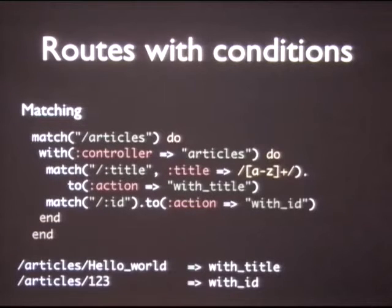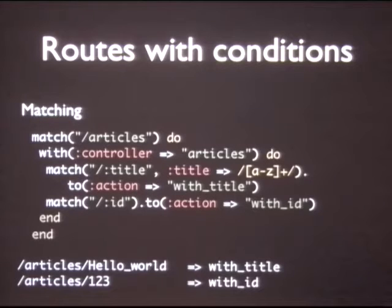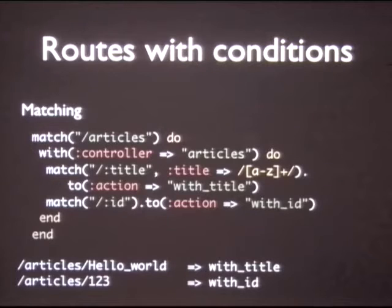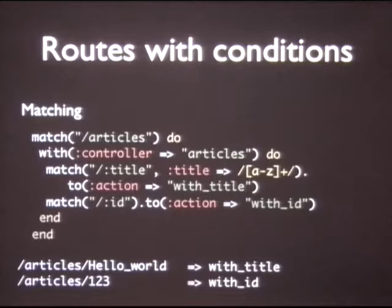Routes with conditions. I'm actually sneaking in some more features here. Pretty much in order to be flexible, any single method that's available when building routes, you can pass a block to it, and those settings will be applied to every route declared in that block. So here I'm setting a prefix for every route declared to articles, with controller articles. Every route in that second block is going to have the controller set to articles. And match the placeholder title — I'm setting a regular expression on the title to match it.